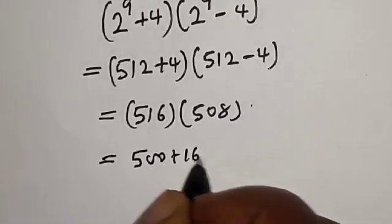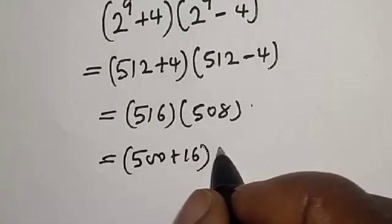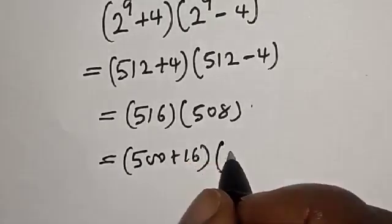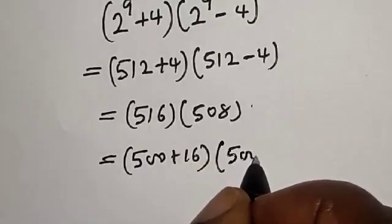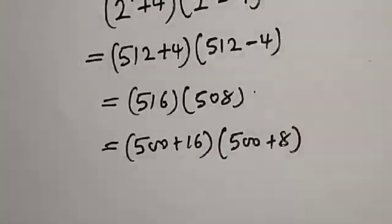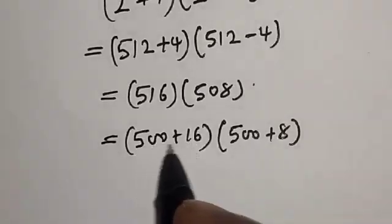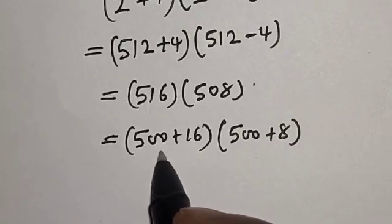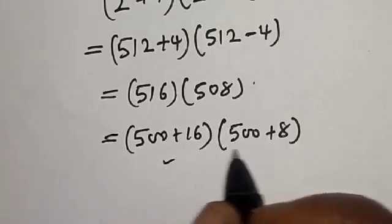516 is the same as 500 plus 16, and 508 is the same as 500 plus 8. Let's multiply this by this. We have 500 times 500, which is 250,000.